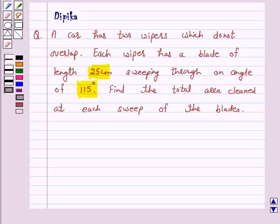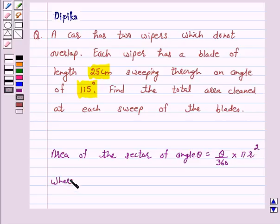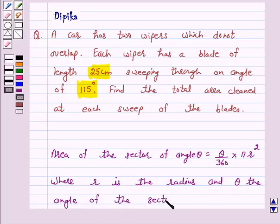The above question will be solved by using the formula for finding the area of a sector of a circle. We know that area of the sector of angle theta is equal to theta upon 360 into pi r square where r is the radius and theta the angle of the sector in degrees.